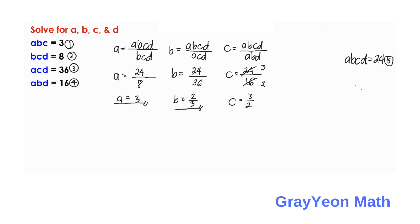And for d, we have to divide abcd by abc. And that is equation 1. So, d is equal to abcd is equal to 24 again. And abc is equal to 3. So, d is equal to 8.